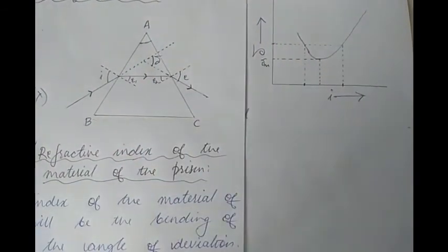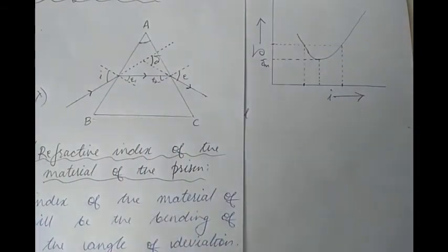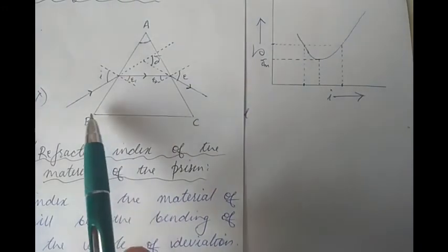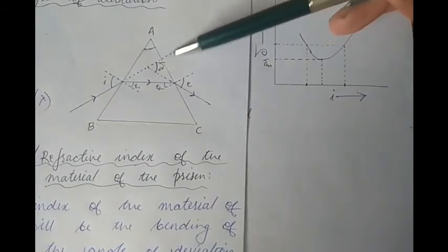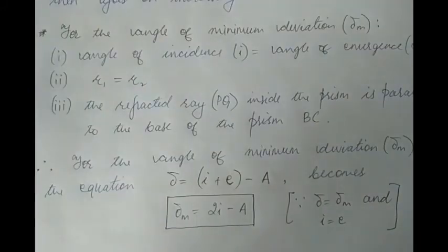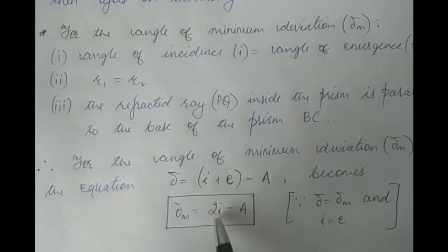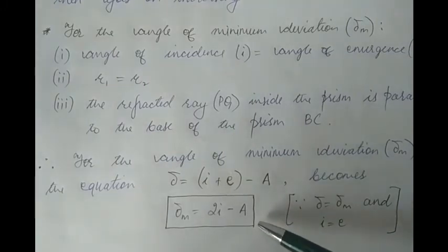Moreover, if ABC is an equilateral prism, then for the angle of minimum deviation, since I will be equal to E and R1 will be equal to R2, the refracted ray inside the prism will be parallel to the base of the prism. So remember: only for the angle of minimum deviation, if delta equals delta m, then I equals E, R1 equals R2, and the refracted ray inside the prism will be parallel to the base BC. Therefore, for the angle of minimum deviation, the equation becomes delta m equals 2i minus A. This equation is strictly for the case of angle of minimum deviation.